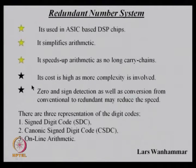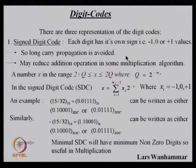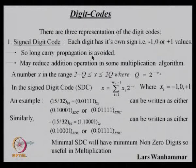There are three presentations in the redundant number system: sign digit code (SDC), canonic sign digit code (CSDC), and online arithmetic code. In sign-magnitude, only one bit represents the sign. In SDC, each digit has its own sign — it can have a value of −1, 0, or +1. Since each bit carries its own sign, long carry propagation is avoided, potentially making it speedier. SDC may reduce the number of addition operations in some multiplication algorithms.